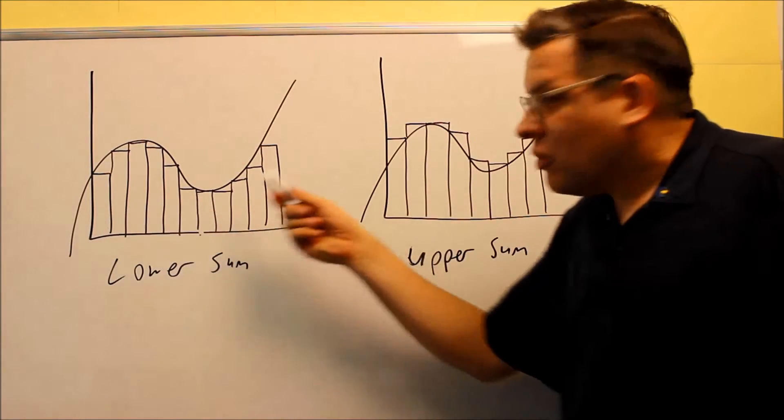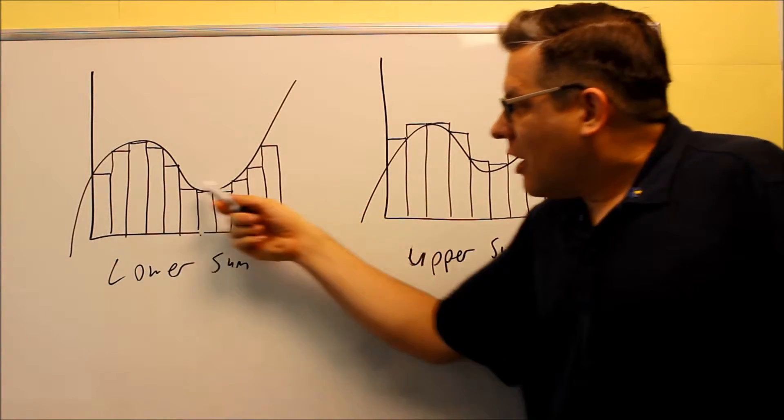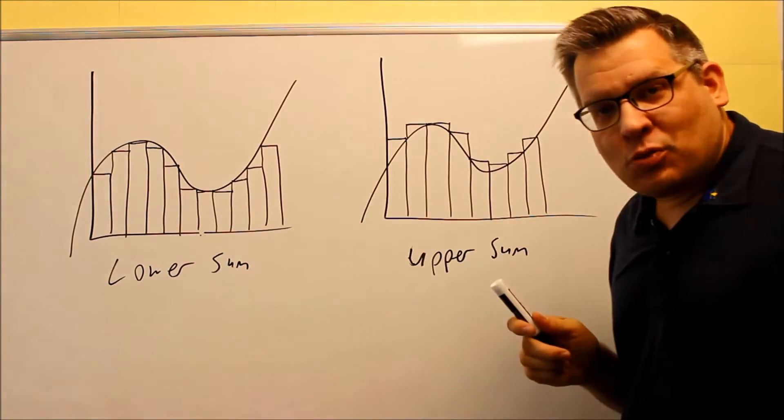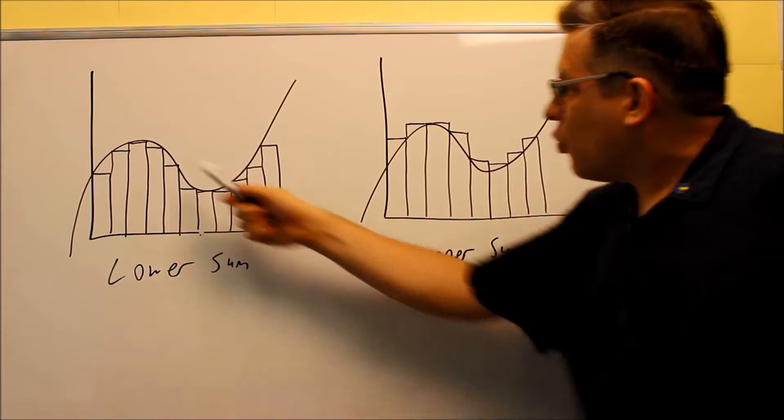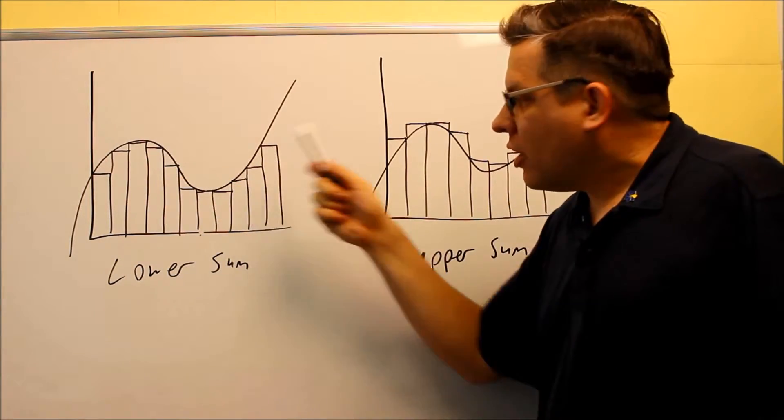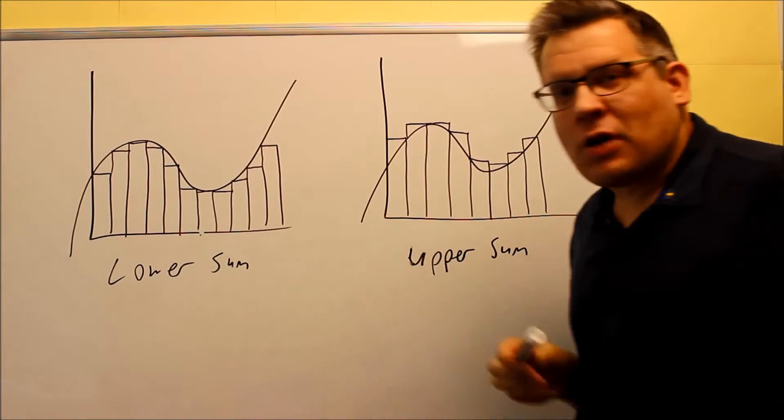Now ideally what you would do to find the exact area is you want to try and find as many rectangles as possible. We notice that the fewer rectangles that we draw, we have more space in between there. And ideally you want to try and fill up as much of this space as possible.